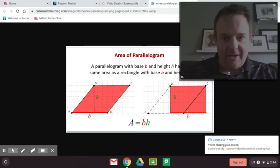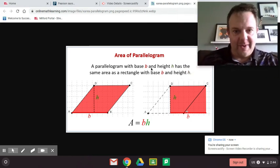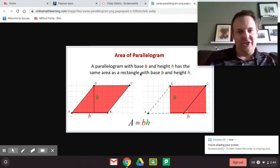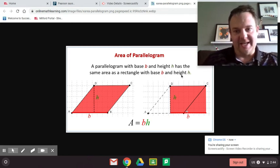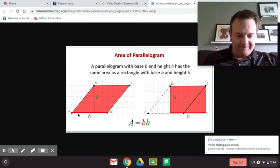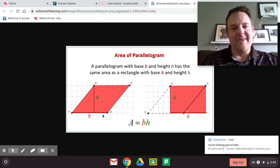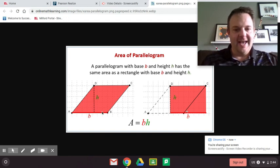The area of a parallelogram with base b and height h has the same area as a rectangle with base b and height h. So if you see, the area of a parallelogram is base times height. That will get you the area of the parallelogram.